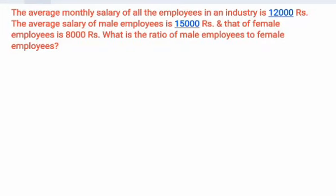The average monthly salary of all the employees in an industry is 12,000. The average salary of male employees is 15,000 and of female employees is 8,000. We have to find out the ratio of male employees to female employees.